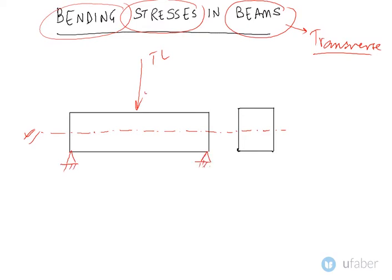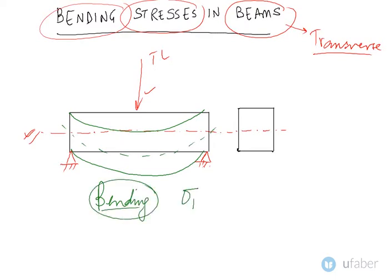What will happen when this load acts in a transverse direction? This beam will tend to bend in this way, so this beam will tend to bend like this. This is called bending. Due to this bending there will be some stress induced and this will be called a bending stress.